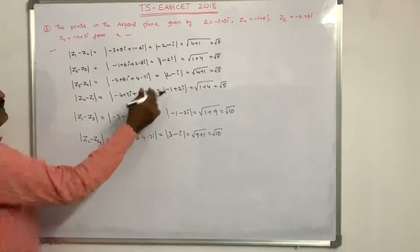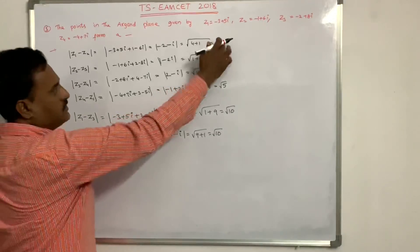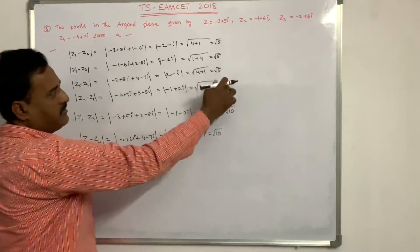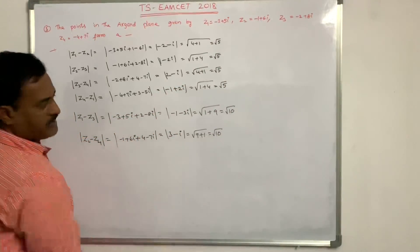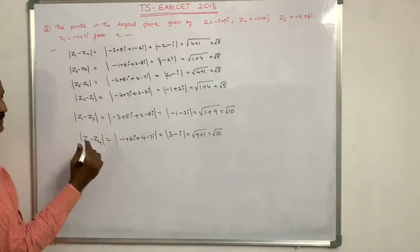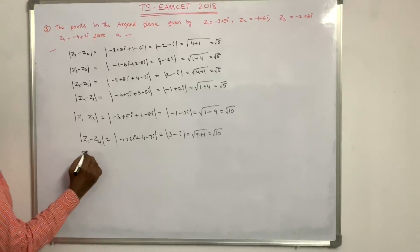All four sides are equal to root 5, root 5, root 5, root 5, and the two diagonals are root 10 and root 10. So the given points form a square.